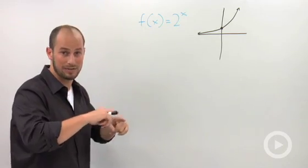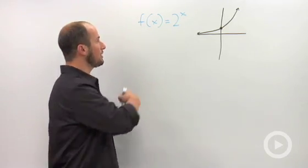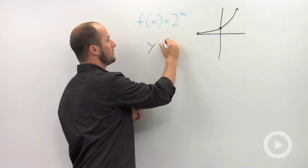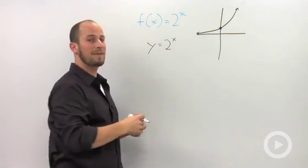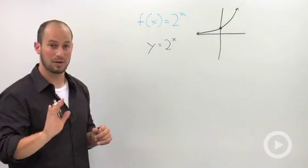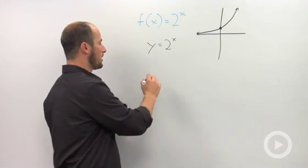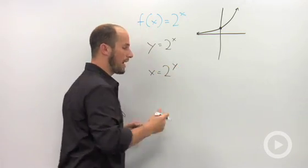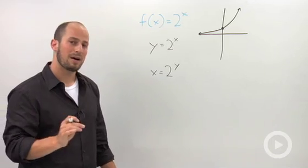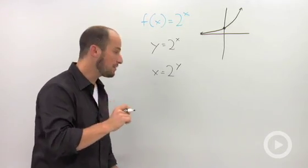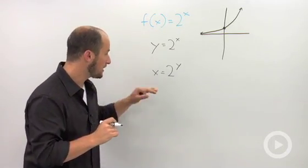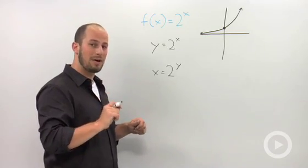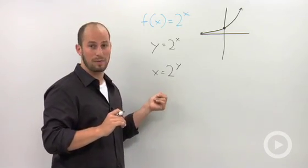If you remember back to our inverses, f of x is the same thing as y. So we let y equal to 2^x, and then to find the inverse, we just switch our x and our y. So we end up with x is equal to 2 to the y. Our last step in finding the inverse was to solve this for y. The problem is, using the methods that we know, there is no way to solve this for y.